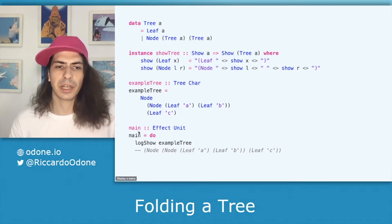And here we have our main. You can think of effect as I.O. and unit is just spelled out completely. And then here we have our print which of course prints out our tree according to the definition of the show instance.